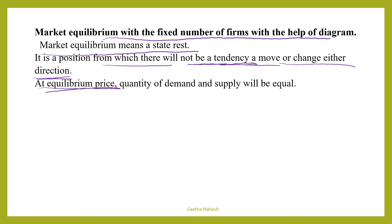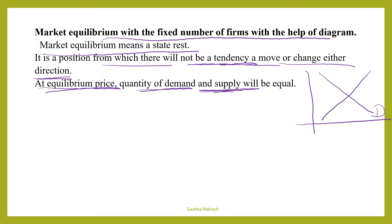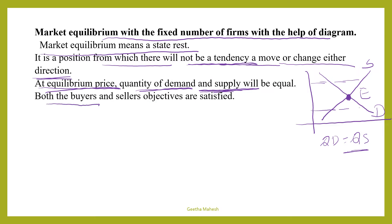At equilibrium price, quantity demanded is equal to quantity supplied. Market demand is equal to market supply — this is the equilibrium position, a state of rest. It does not like to move in either direction; it wants to stay at this position itself. At this position, quantity demanded equals quantity supplied, and both buyer and seller objectives are satisfied at equilibrium price.